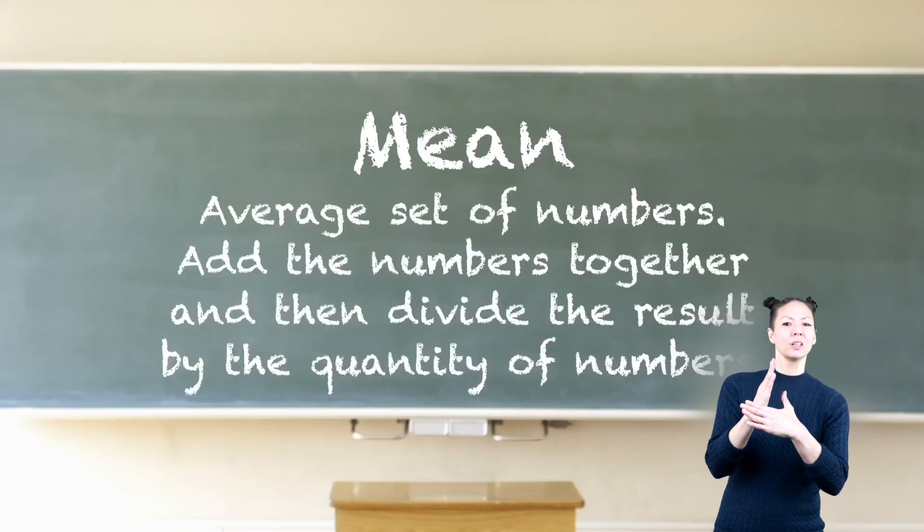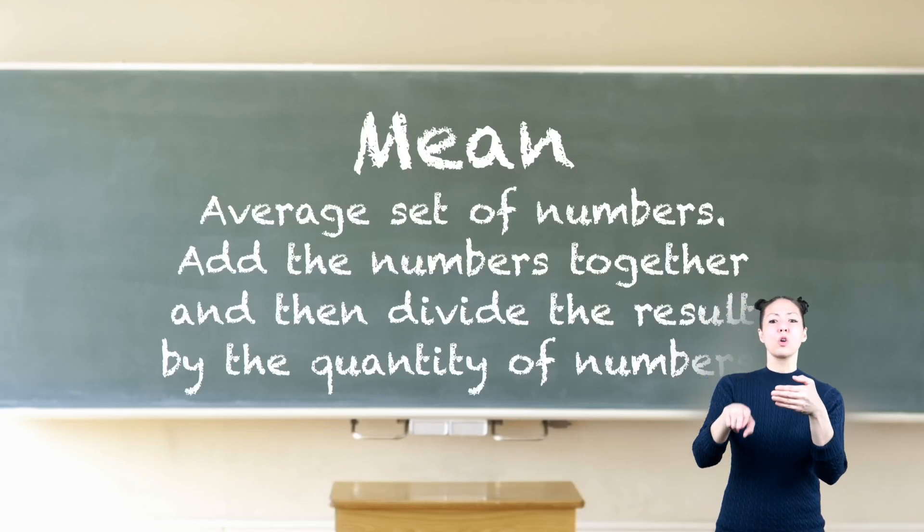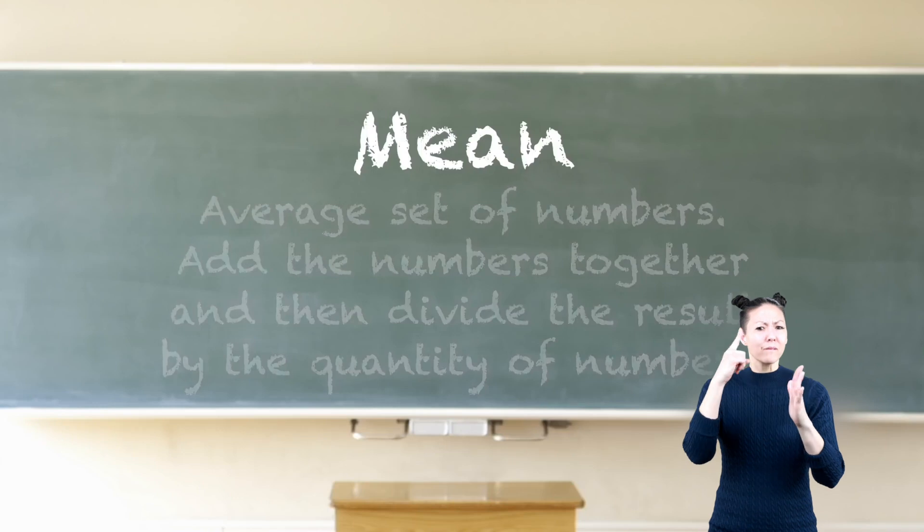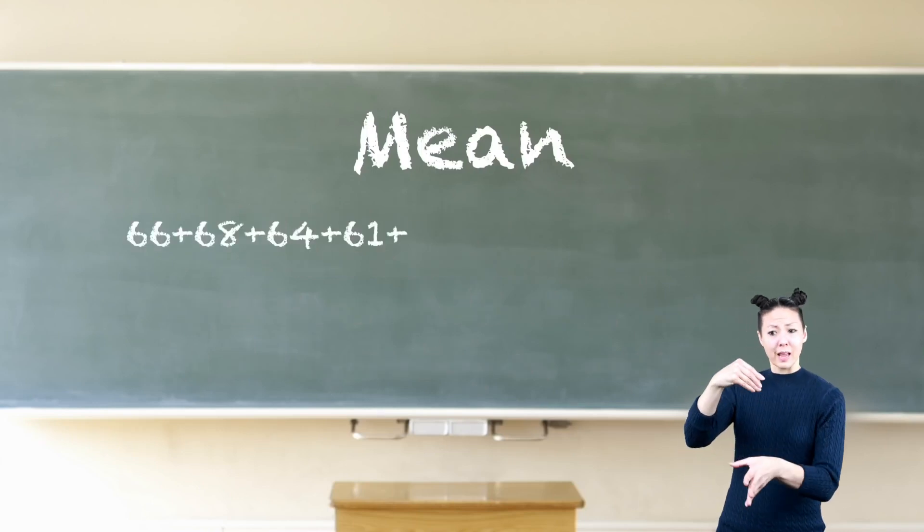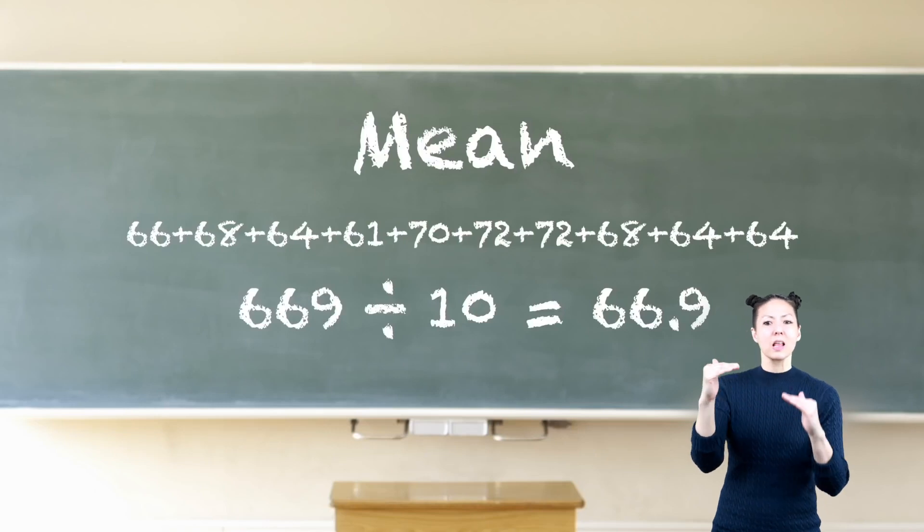The mean is simply the average set of numbers. You add the numbers together and then divide the result by the quantity of numbers. For example, add the temperatures together and then divide by 10. 669 divided by 10 equals 66.9. 66.9 is the mean of the data set.